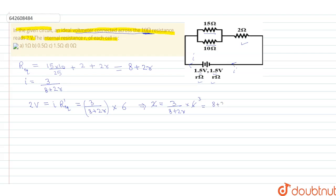And 8 plus 2r is equal to 9. So 2r is equal to 9 minus 8, r is equal to 1 by 2, or 0.5 ohm as the answer.